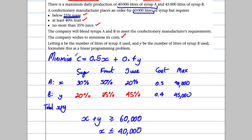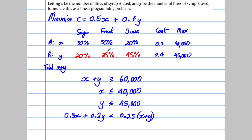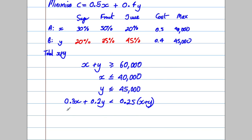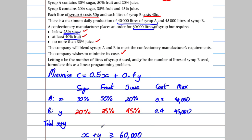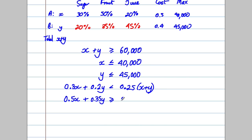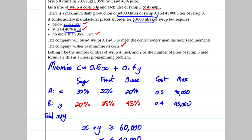For the fruit constraint, we want at least 40% fruit. From syrup A we get 50% so that's 0.5x, and from syrup B we get 35% so that's 0.35y. This must be at least 40% of the total: 0.5x + 0.35y ≥ 0.4(x + y).